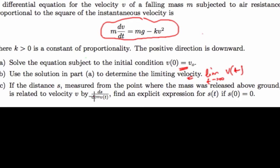We know that s to t equals v of t. So we are told to find an explicit expression for s of t given this initial condition.